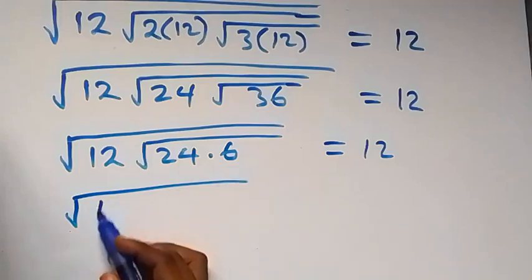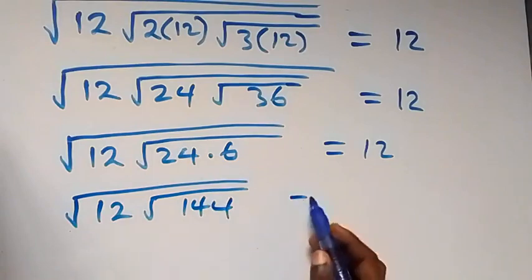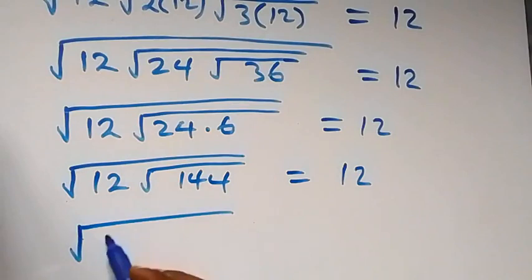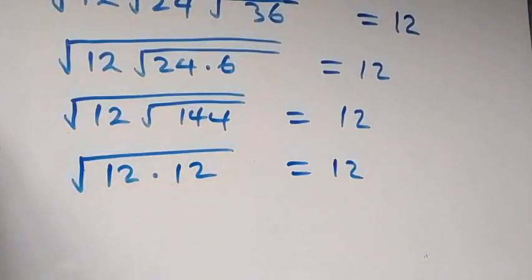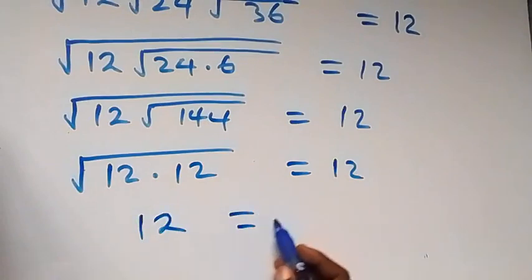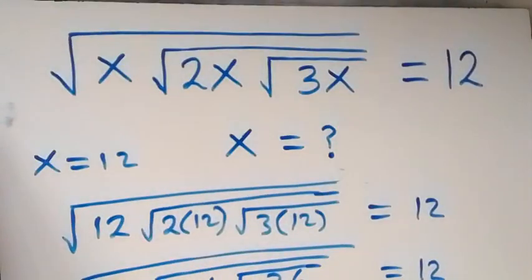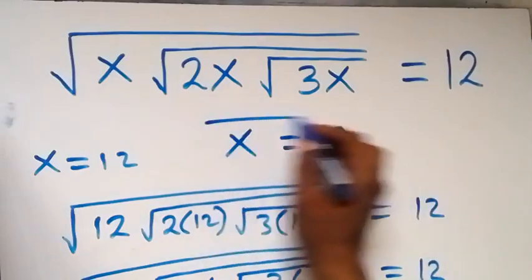We have square root of 12, then square root of 144, which equals 12. Root 144 is 12, so we have square root of 12 times 12, which equals 12. And of course, this is 12, which equals 12. Left-hand side equals right-hand side, and hence it is confirmed that the value of x equals 12.